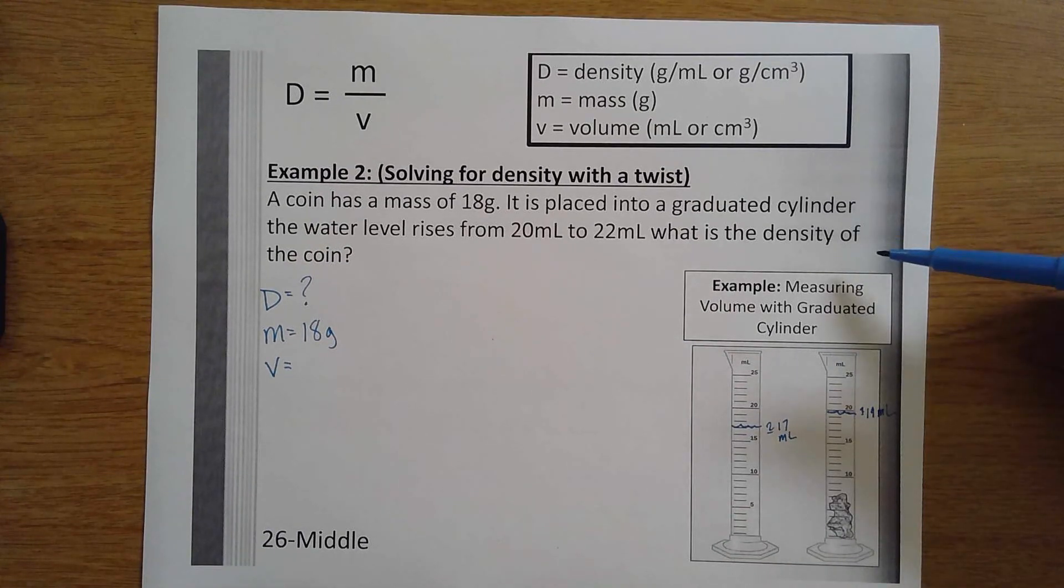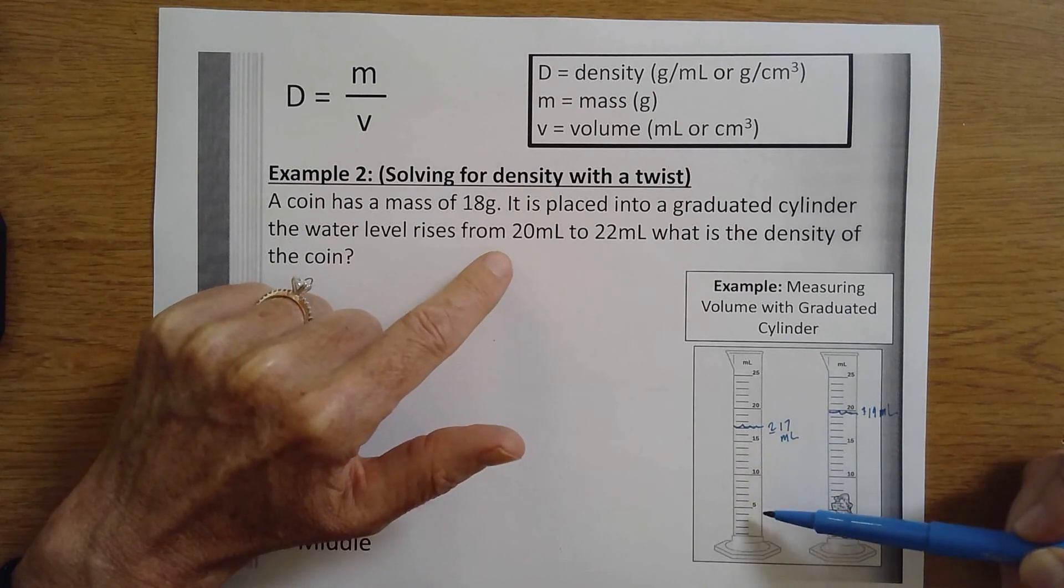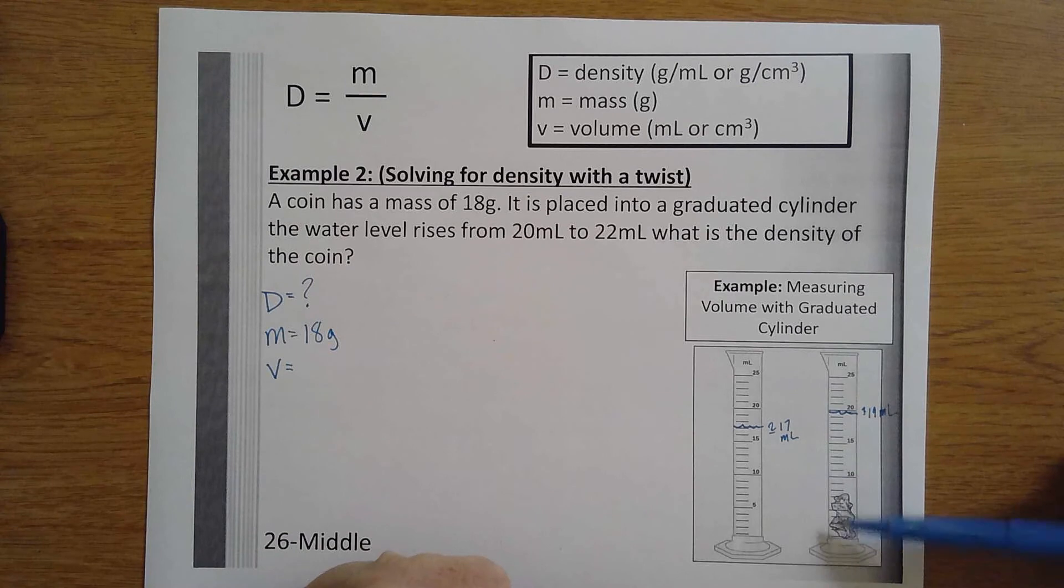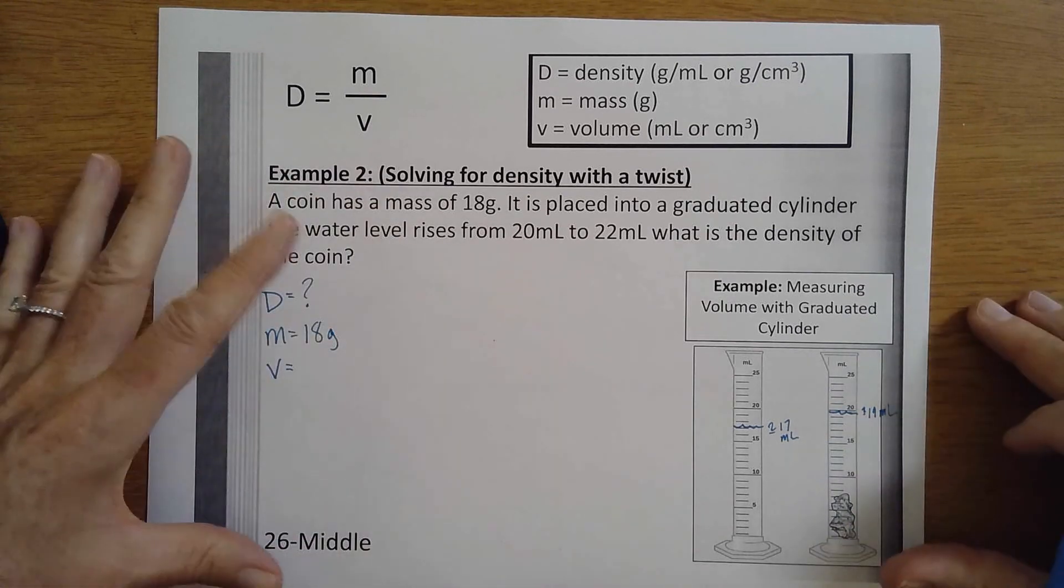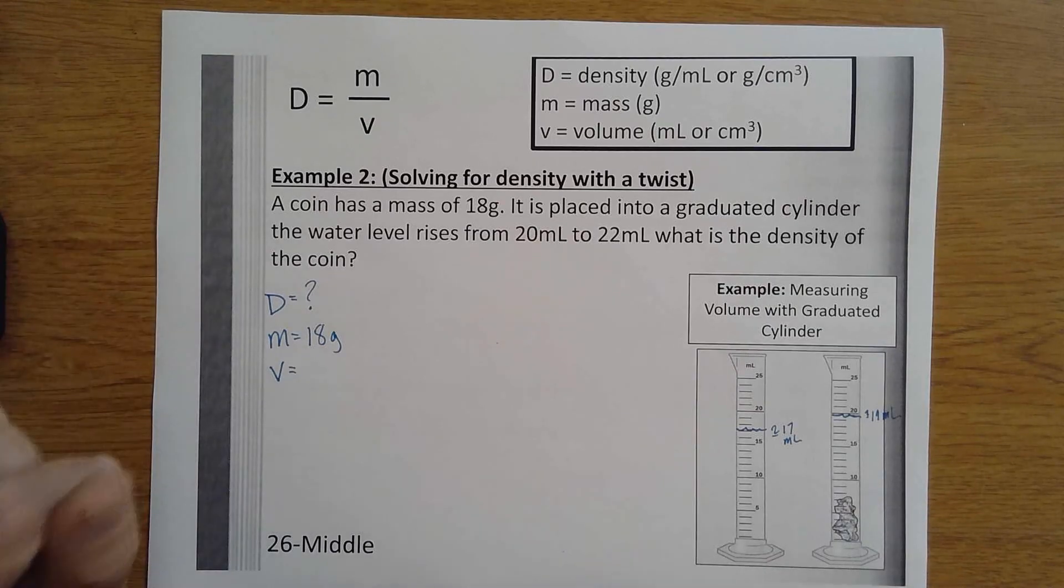They plunked, instead of this glob, they plunked in a coin, and the water level rose to 22 milliliters.